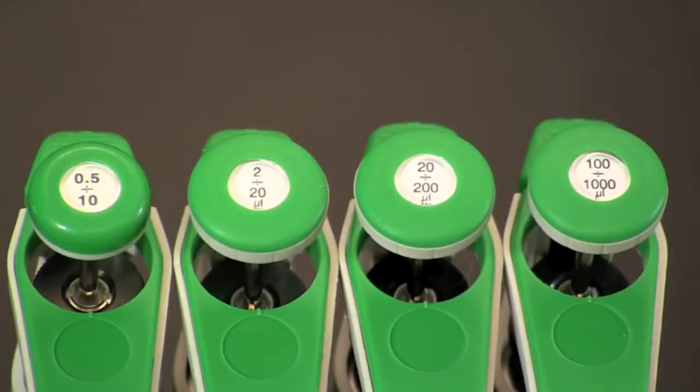The volume range for a micropipette can be found on the top of the plunger button. The most commonly used ranges for micropipettes include the 0.5 to 10 microliter, the 2 to 20 microliter, the 20 to 200 microliter, and the 100 to 1000 microliter. In each case the two numbers indicate the range between which the pipette can measure with accuracy.